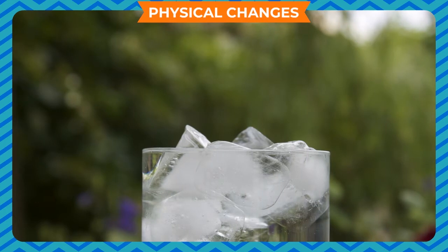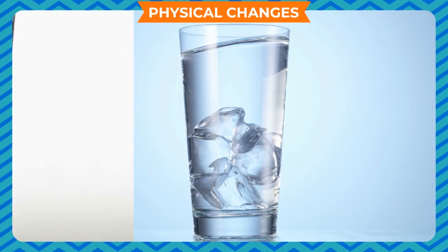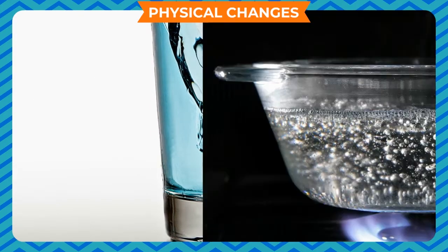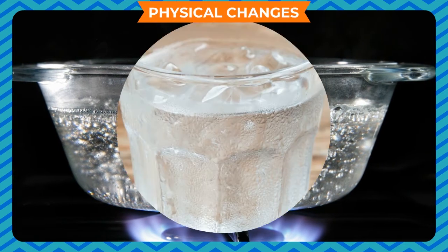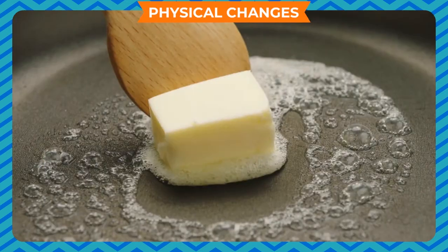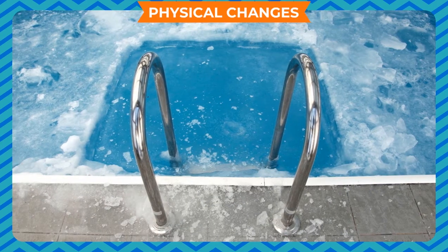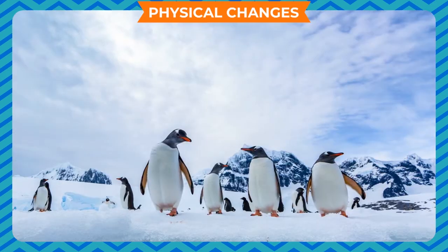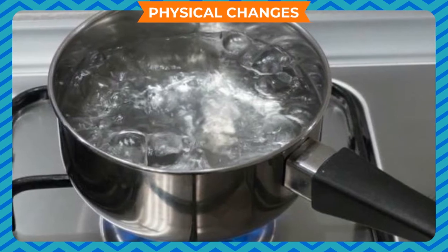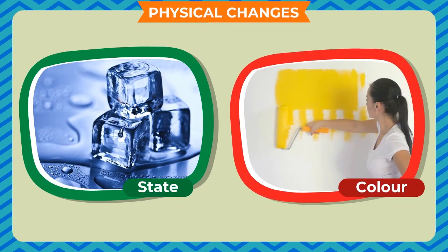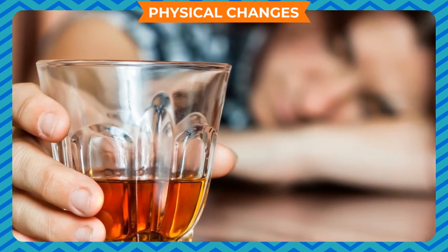A physical change is a change in the physical properties of a substance without a change in its chemical composition. As a result of physical change, a substance changes its form but not its chemical composition. We can conclude that no new substance is formed, the change is temporary and reversible, and the composition of the matter remains unaltered. There may be some changes in physical properties such as state, colour, smell, etc. The change can be reversed on withdrawing the agent that caused the change.